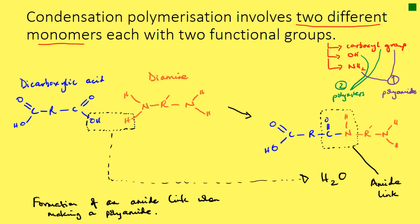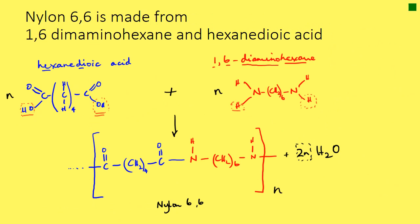What you've seen there is the formation of an amide link when making a polyamide. What we're going to look at now is an example of a polyamide that you need to know the repeating unit of, and that is nylon 6-6. There are in fact two polyamides you need to know the repeating unit of — the other one is Kevlar — but first nylon 6-6. Nylon 6-6 is made from 1,6-diaminohexane and hexanedioic acid.